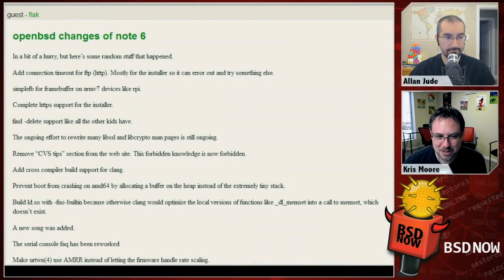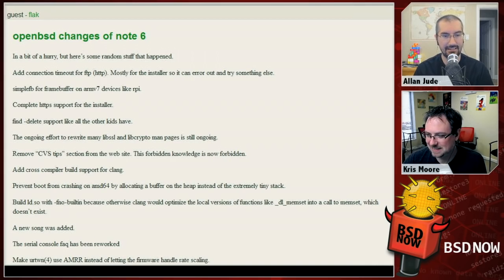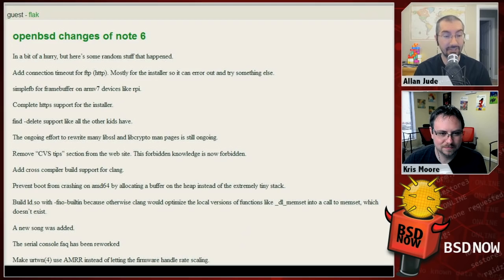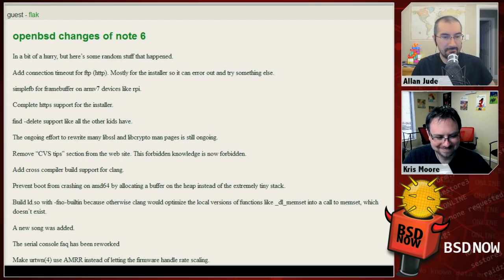First up, we have some of OpenBSD's recent changes of note for 6.0. OpenBSD can now be cross-built using Clang. They found that their ld.so, when built with the no-builtins option, would otherwise have Clang optimize local versions of functions like dlmemset into a call to memset, which doesn't actually exist in that library. They've also modified their FTP client, which also serves as their HTTP client — equivalent to wget or fetch.